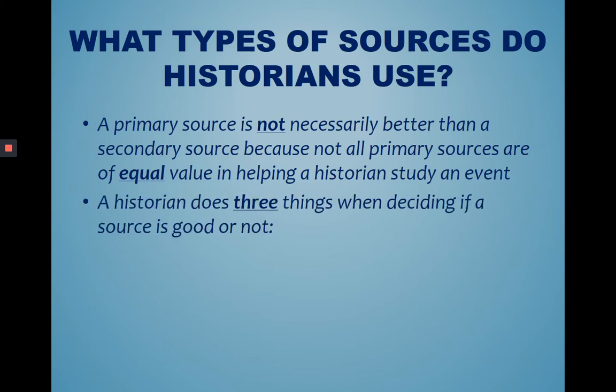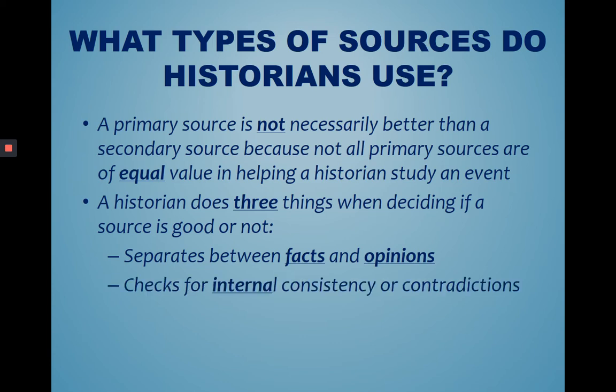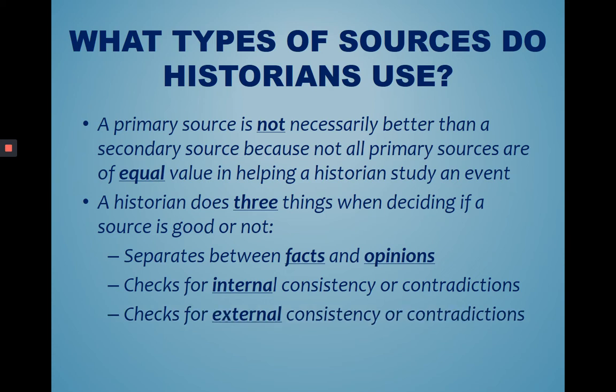A historian does three things when deciding if a source is good or not. First, they need to separate between facts and opinions. They need to check for internal consistencies or contradictions. And then they need to check for external consistency or contradictions.